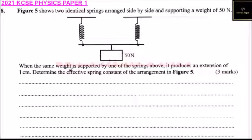When the same weight is supported by one of the springs above, it produces an extension of one centimeter. Determine the effective spring constant of the arrangement in Figure 5.